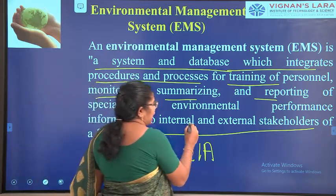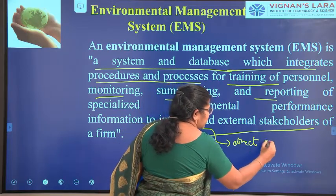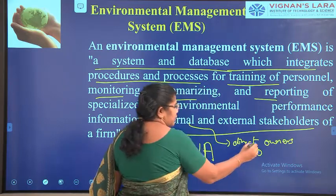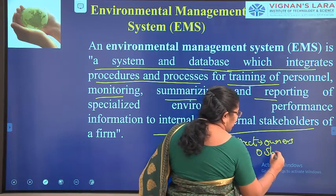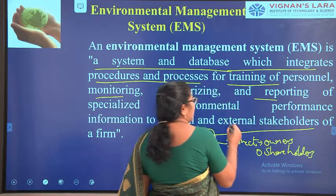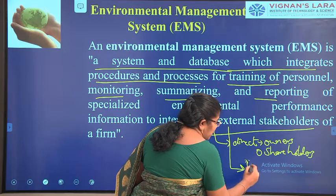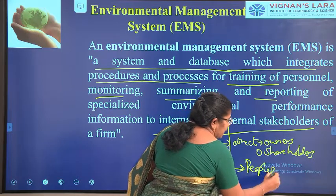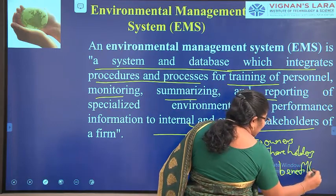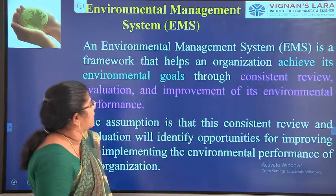Who are the internal stakeholders? They are the direct persons — the owner or the shareholders. Who are the external stakeholders? They are the persons who are indirectly involved — the people around the place, those who are working and who will be benefited by the process.